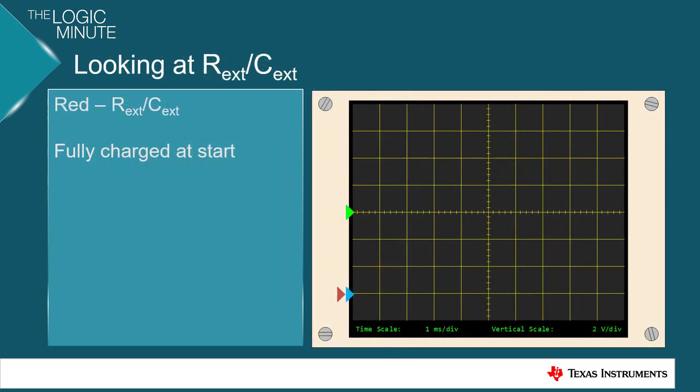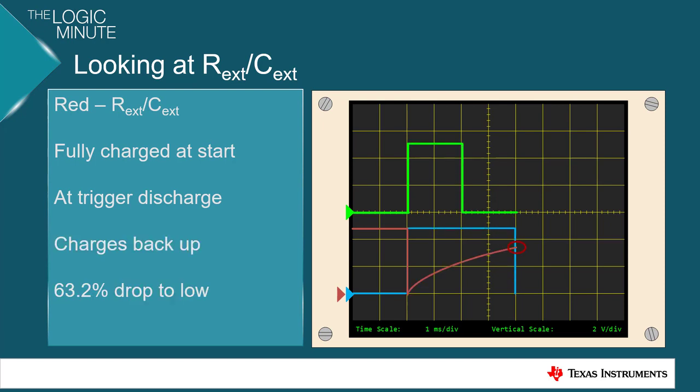So if we treat the red line as our R external over C external pin, we'll see that it's fully charged at the start. At the trigger, it will discharge, and it will slowly charge back up. And at 63.2%, our output will drop low, and it will be ready for another trigger.